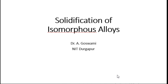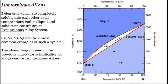We will start with the very basic form of alloy system called isomorphous alloys. Isomorphous alloys are made up of two elements which are completely soluble in each other at all compositions, both in liquid as well as solid state. Common examples are the copper-nickel and gold-silver systems.